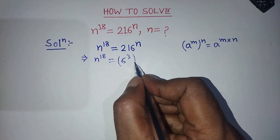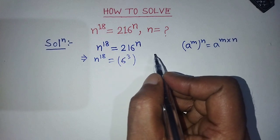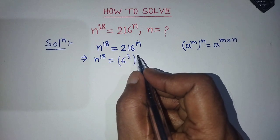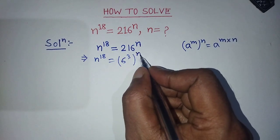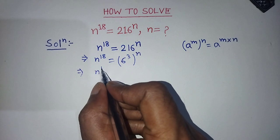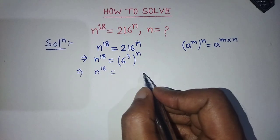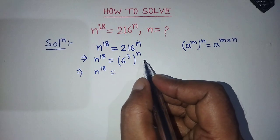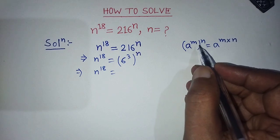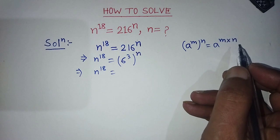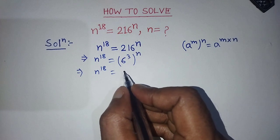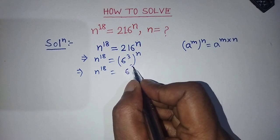If you convert 216 into exponential form, we write 6 to the power 3 in place of 216, and in place of the power, we write n. So we have n to the power 18 on the left hand side. On the right hand side, we apply the formula: a to the power m, whole to the power n, is equal to a to the power m into n. So we can write 6 to the power 3n.